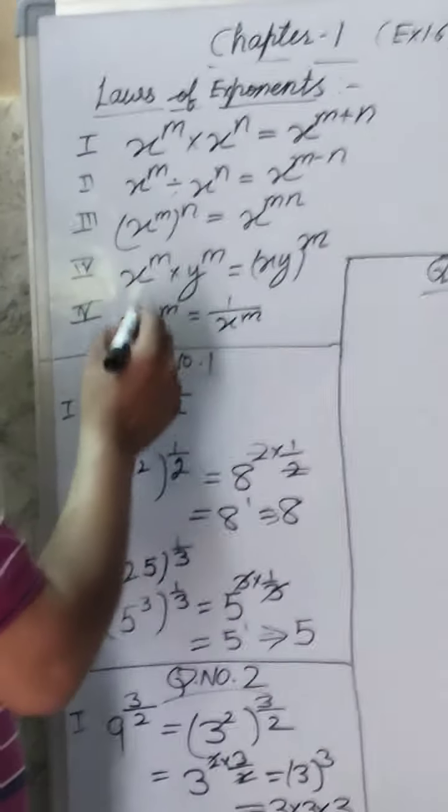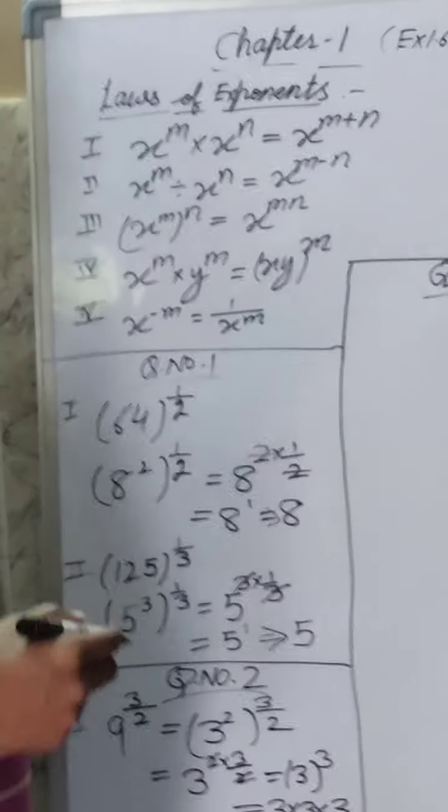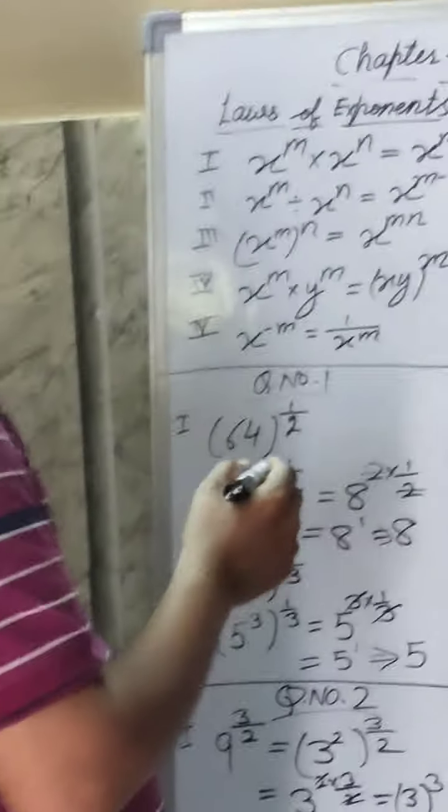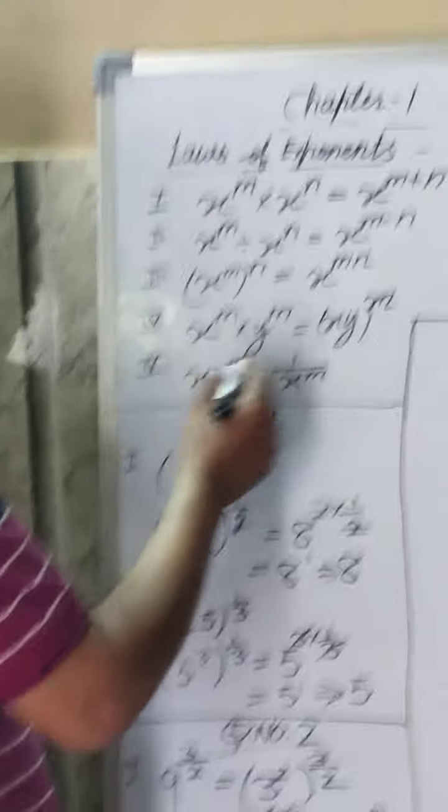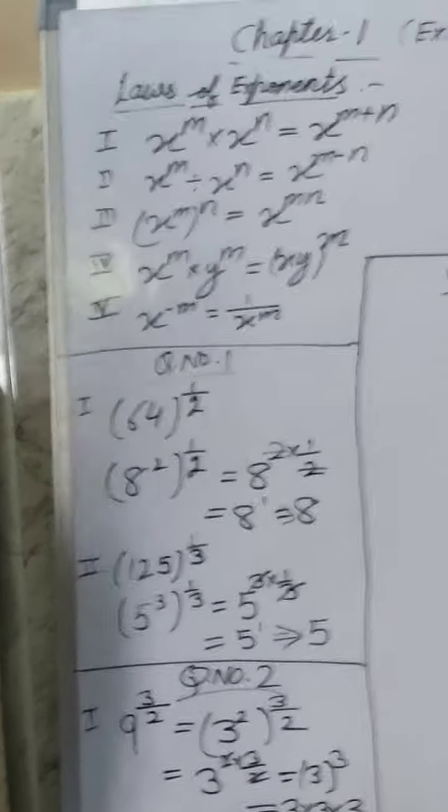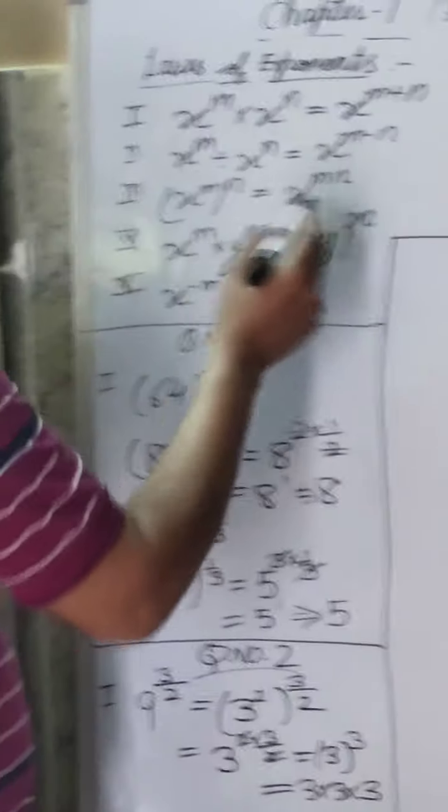If power is to power, it will multiply: x power m whole power n equals x power m times n. If bases are different and power is same, then bases will multiply, power will remain same: x times y power m.